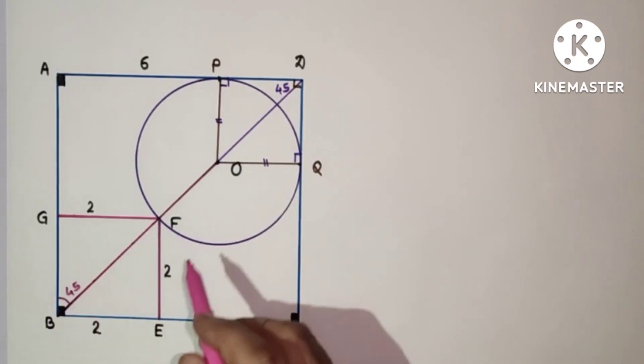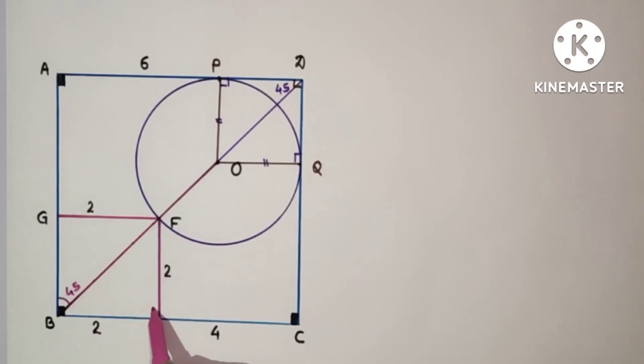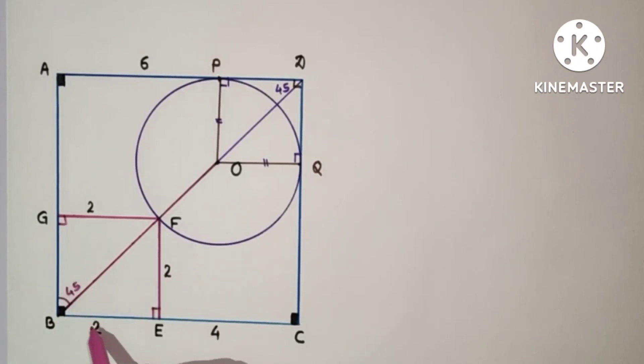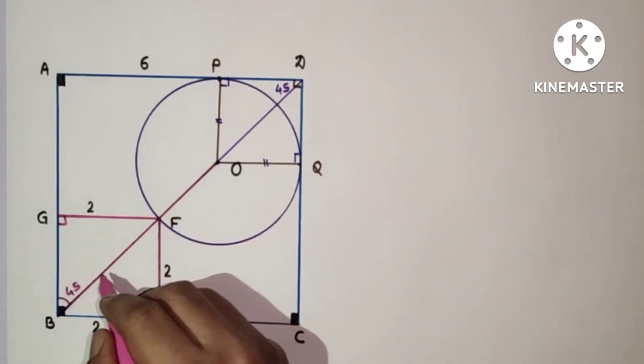Now BF is, this is 2, this is 2. This is a square given. This is 2, this is 2, this is 2. So this BF is 2 root 2.